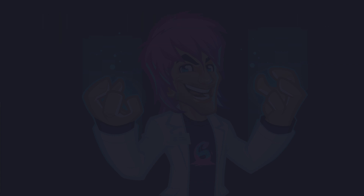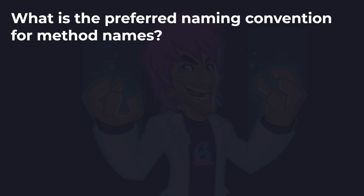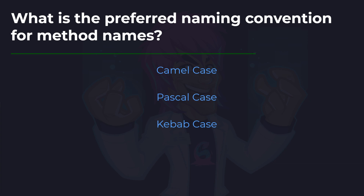Now let's check those who pay close attention. What is the preferred naming convention for method names? Is it camel case, Pascal case, or kebab case? I mentioned this and I purposely haven't written the cases in the style in the answer, otherwise it might give it away. And the answer is Pascal case — where every word starts with a capital. That is the preferred way to name methods in C#.